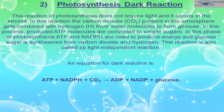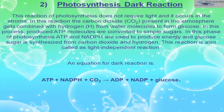The dark reaction does not require light — that is why it is called the dark reaction, or light-independent reaction. It occurs in the stroma, also known as the matrix or bed of the chloroplast. In this reaction, carbon dioxide from the atmosphere combines with hydrogen from water molecules to form glucose. The hydrogen atom from H₂O combines with CO₂ to form glucose.